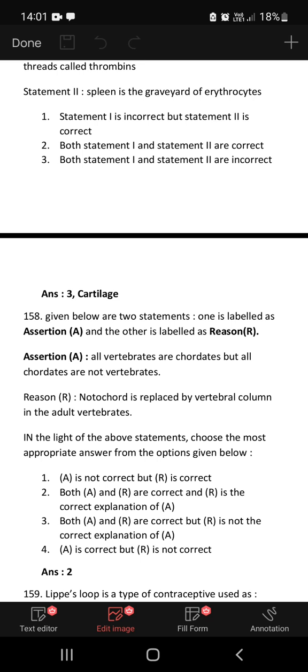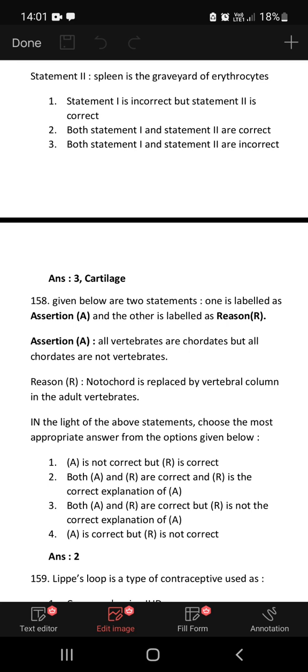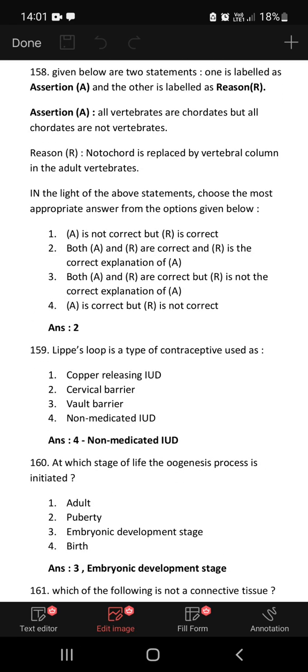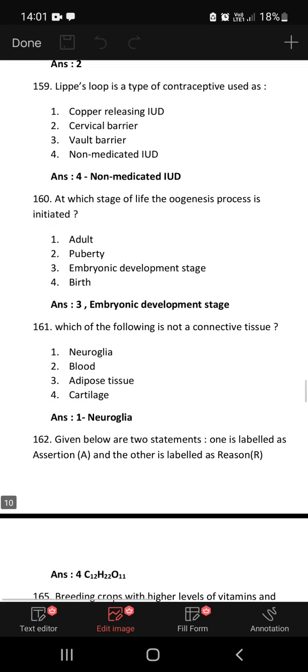Assertion and reason: all vertebrates are chordates but all chordates are not vertebrates. Reason: notochord is replaced by vertebral column in the adult vertebrates. Here both A and R are correct and R is the correct explanation for A.